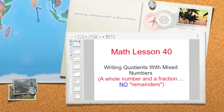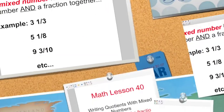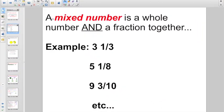Just a quick little reminder, a mixed number is a whole number and a fraction. There are no remainders. So let's see more about this. A mixed number is a whole number and a fraction together. I gave you some examples like three and a third, or five and one eighth, or nine and three tenths, etc.